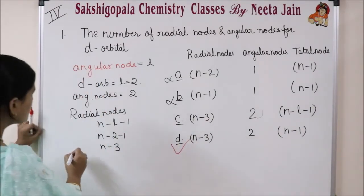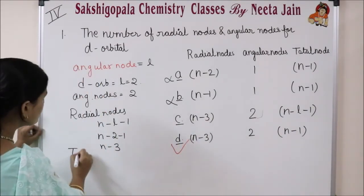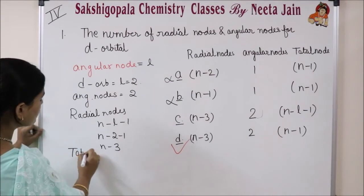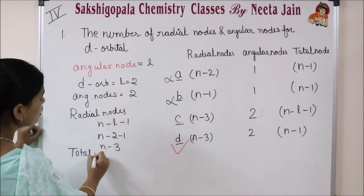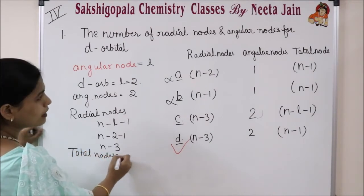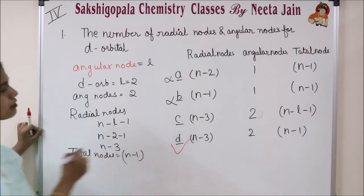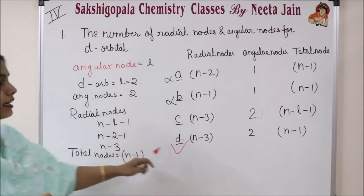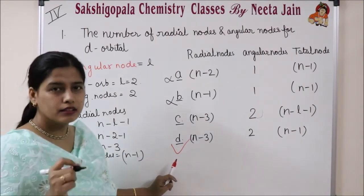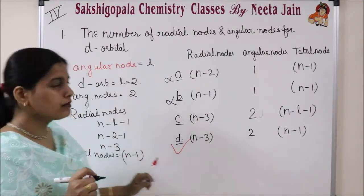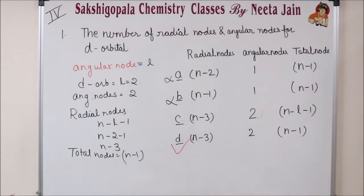Also check total nodes: total nodes equals N minus 1. So the correct option here is D. Take a screenshot and try to solve it yourself.